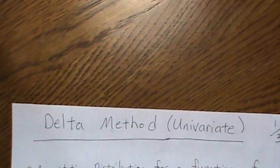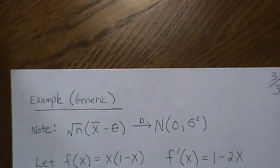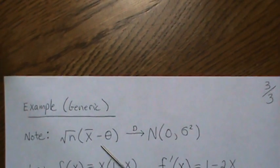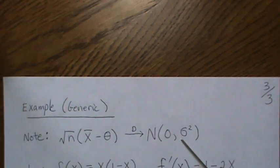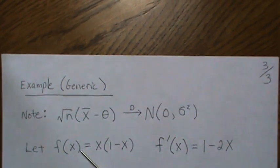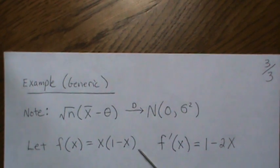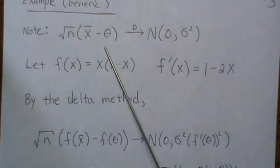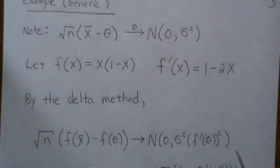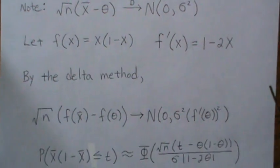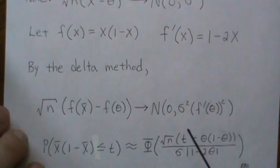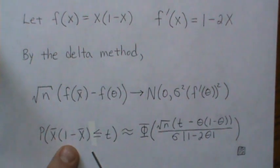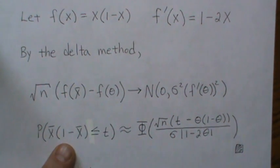Here's a generic example. By the central limit theorem, sqrt(n)(X-bar minus theta) converges to normal(0, sigma squared). If we have a function g(x) = x(1 minus x), its first derivative is 1 minus 2x. Then by the Delta method, since X-bar converges in distribution, a function of it also converges in distribution with variance sigma squared times [g'(theta)] squared.